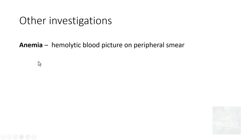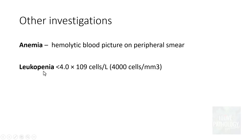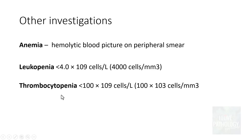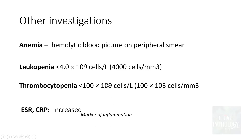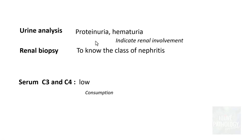Other investigations include a routine CBC showing anemia; peripheral smear examination may show a hemolytic blood picture. The total white blood cell count will be reduced, and thrombocytopenia may also be present. ESR and C-reactive protein will be elevated as markers of inflammation. Urine analysis is performed to look for renal damage in the form of lupus nephritis — proteinuria and hematuria indicate renal involvement, after which renal biopsy is suggested to determine the class of nephritis. Serum C3 and C4 levels will be low, indicating complement consumption in SLE.